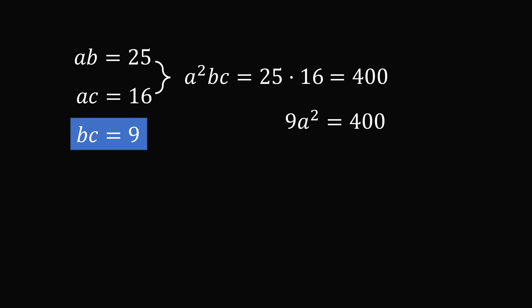This means 9a squared is equal to 400, which means a is equal to 20 over 3. We want to take the positive root because we're dealing with the radius of a sphere.